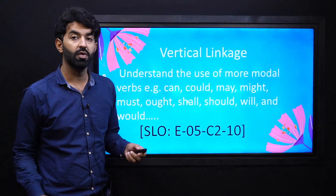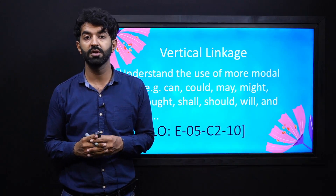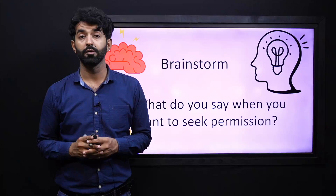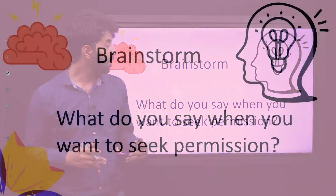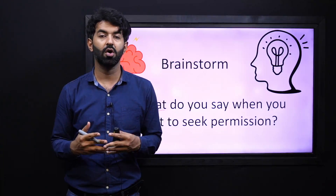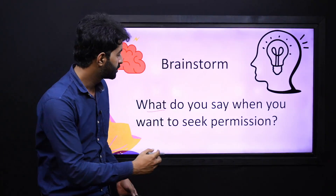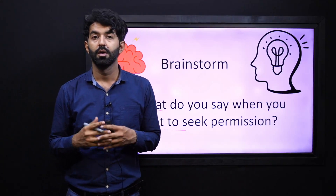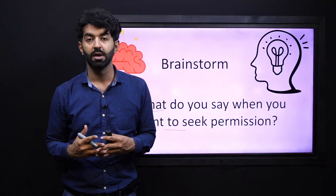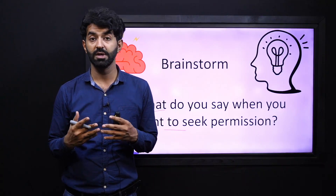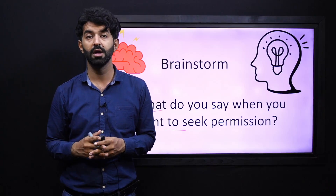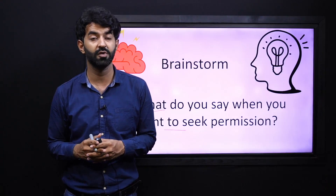Let's look at our vertical linkage, which links our SLO with the previous grades' student learning outcomes on the same kind of topic. Moving on with our brainstorming session for today, you have to answer this question — think over it: what do you say when you want to seek or ask permission? What are the manners and the words that you use when you are asking for something to do? Think about the words, note them down, and then discuss with your fellows.